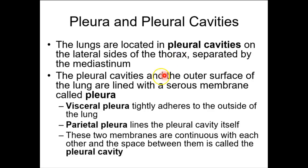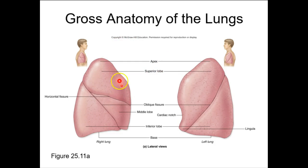Some anatomy: the right lung has superior, middle, and inferior lobes. The left lung has only two lobes — superior and inferior — so the difference is that middle lobe. Make sure you say middle and not medial.